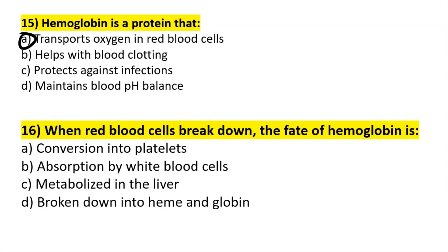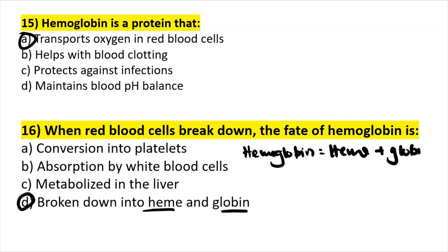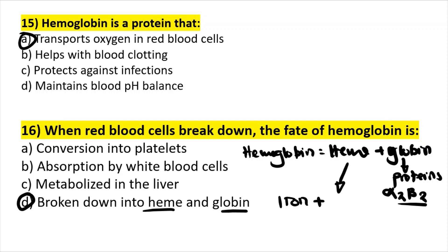Question sixteen: when red blood cells break down, hemoglobin breaks down into heme and globin. Hemoglobin is made up of heme and four chains of globin — alpha-2 and beta-2 chains. Heme itself is made up of iron plus porphyrin.